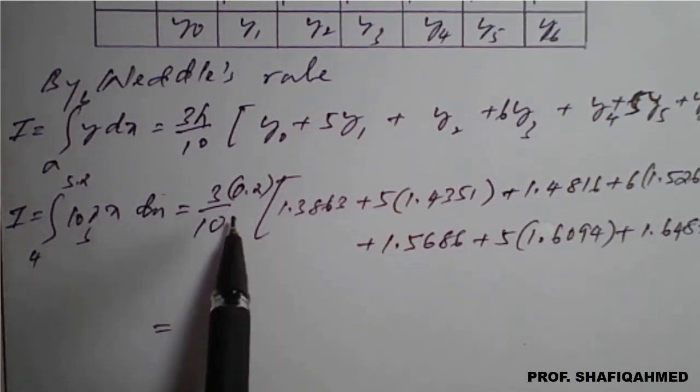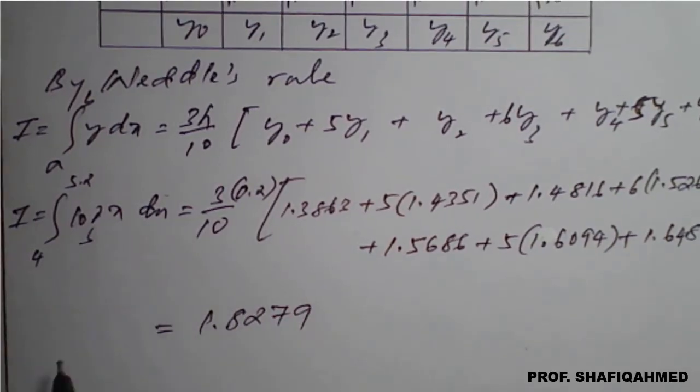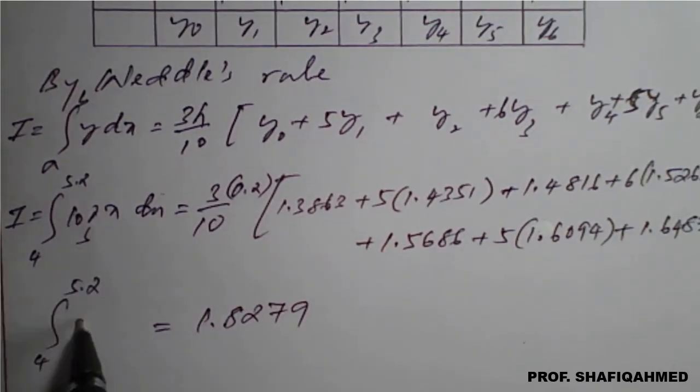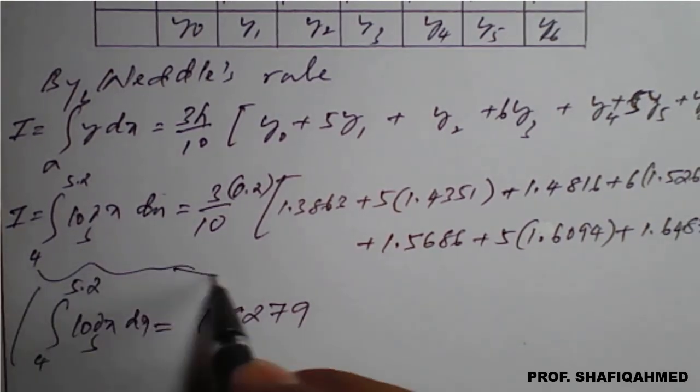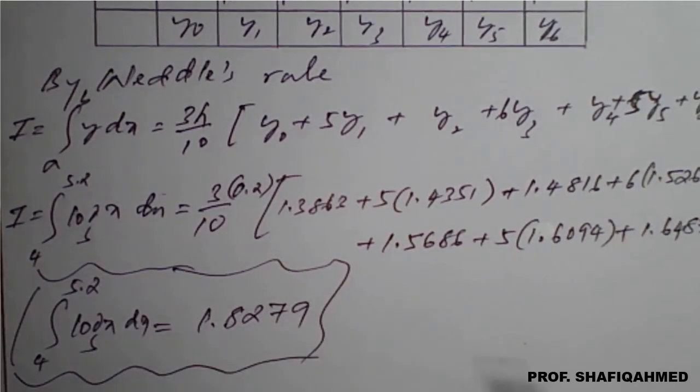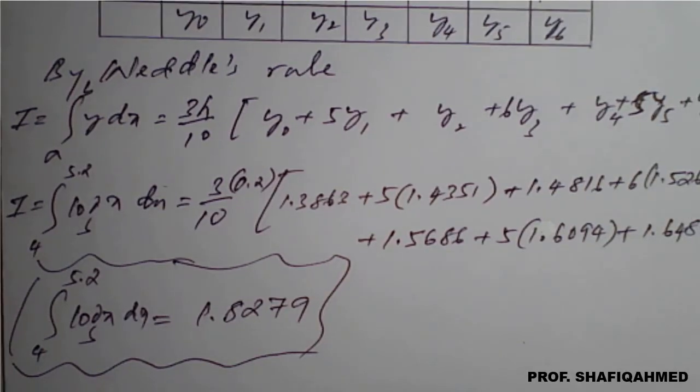If you enter all this data at once in the calculator and simplify, you will get the answer as 1.8279. This is the required solution of the given integral using Weddle's rule under numerical integration.